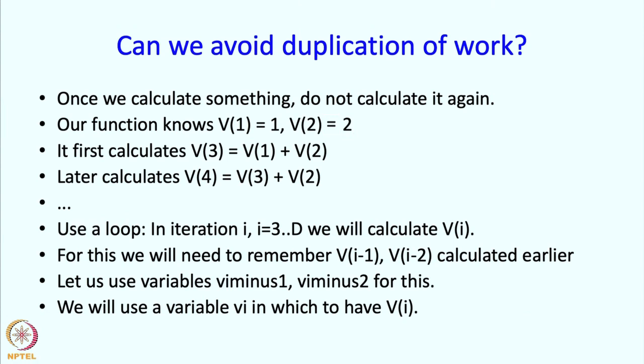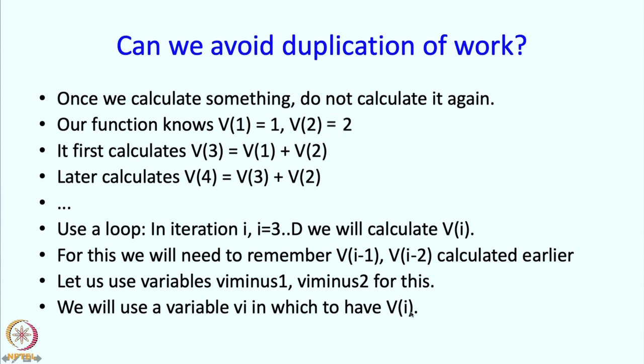At the beginning of the ith iteration, these variables will contain Vi-1 and Vi-2. We will also use a variable Vi in which we will construct Vi. So Vi is a variable, Vi-1 and Vi-2 are going to be our variables, and the important point is that at the beginning of iteration i we want Vi-1 and Vi-2 to contain Vi-1 and Vi-2 which were calculated earlier.